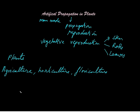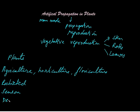One disadvantage of artificial propagation is that it is restricted from plants to plants. It has to be taken in a particular season of the year and it needs to have a desired character to get the artificial propagation done. But the advantages are many, and we would be listing them later.